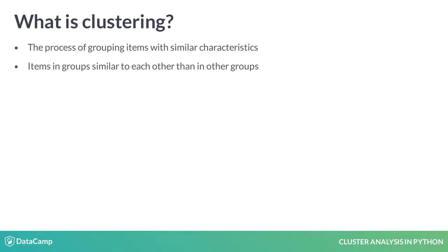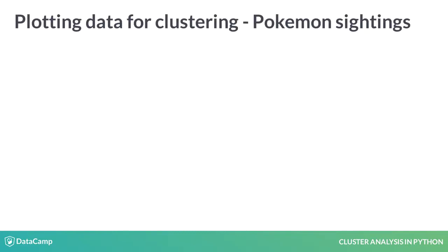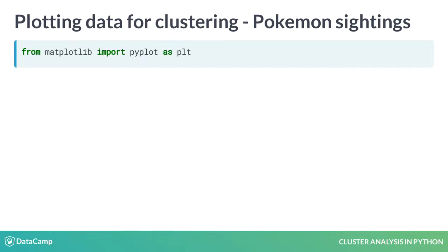A simple example to demonstrate clustering would be to group points on a 2D plane based on their distance. Let us try to visualize it in Python. To make a scatter plot, we will use the pyplot class of the matplotlib library in Python. We will plot the sightings of Pokemon in a park in the form of coordinates. The first step is to import the required class as plt.